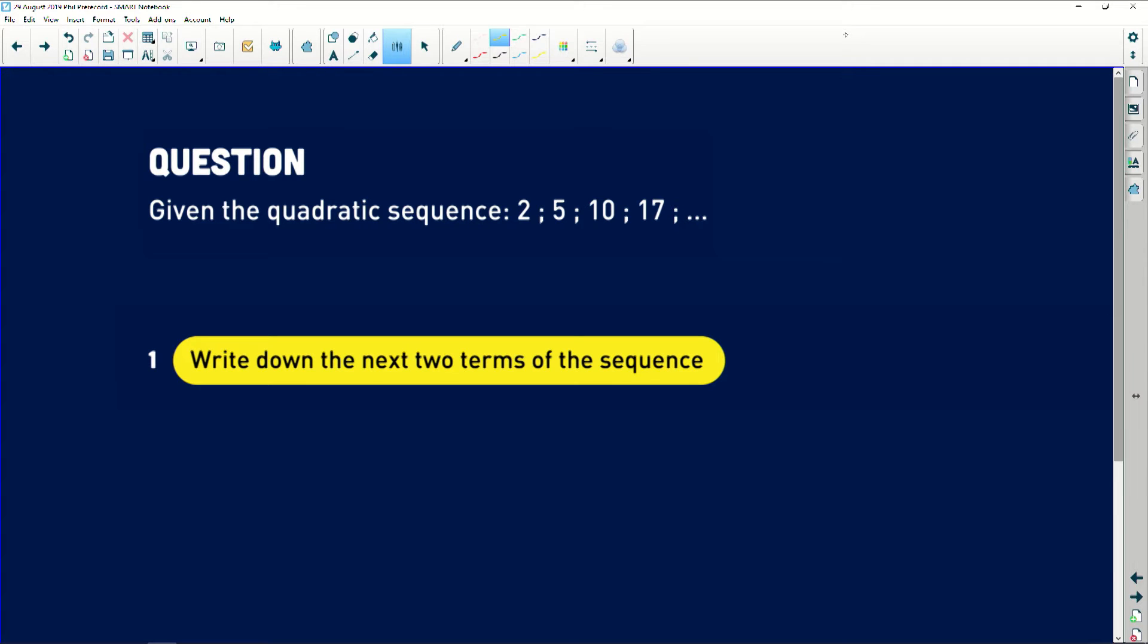You're given the quadratic sequence 2, 5, 10, 17. Now they say this to you specifically because it should immediately tell you common second difference.